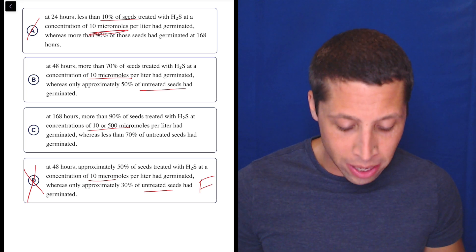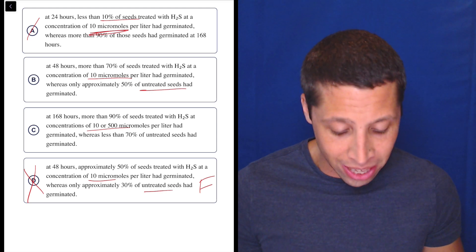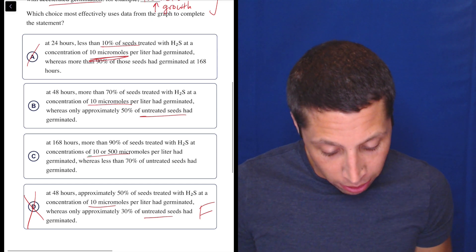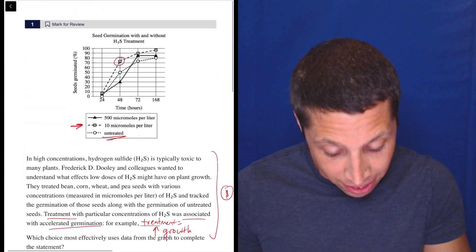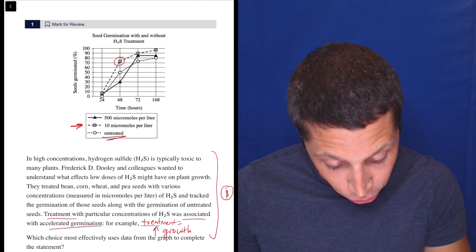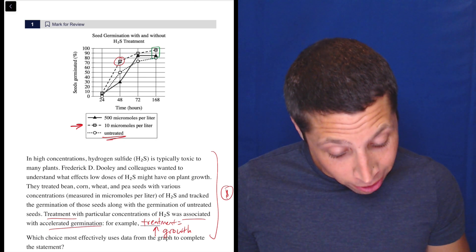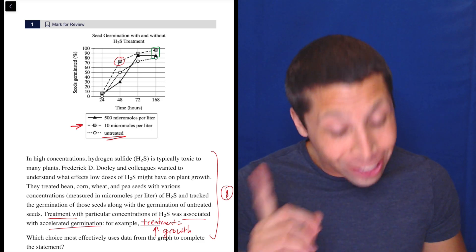So let's look at C. At 168 hours, more than 90% of seeds treated with H2S at concentrations of 10 or 500 had germinated. So, okay, let's change color here. I'm going to use green. So 10 or 500, 90%, 168. So 168, 10 or 500 is the triangle and the square. The triangle does not look like it's at 90, right? It looks less than 90, though. It's 80. It's close, but close is not enough, right?